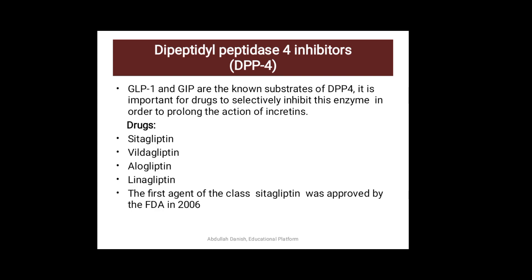If you use drugs such as Sitagliptin, Vildagliptin, Alogliptin, or Linagliptin, they inhibit DPP-4. This preserves GLP-1 activity, which in turn increases insulin secretion and lowers glucose levels.